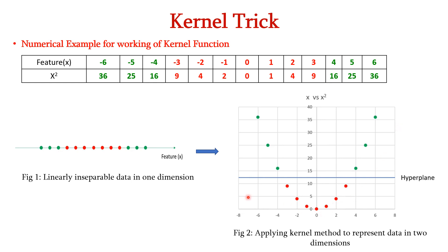So, from this diagram we can clearly see that the green points are separated from the red points. So, we can easily draw the hyperplane in this higher dimensional space. So, thus applying the kernel method to represent the data in two dimensions is advantageous than in one dimension.